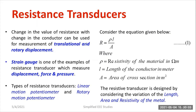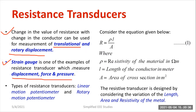Let us understand the basic principle of the resistive transducer. A change in the value of resistance with a change in the conductor can be used for the measurement of translational and rotary displacement. Translational motion means linear motion, so you can measure both linear and rotational motion. One example of a resistance-based transducer is the strain gauge, which measures displacement, force, pressure, etc.